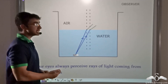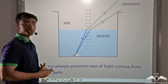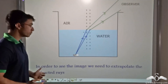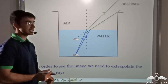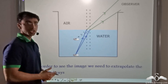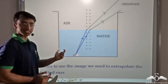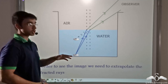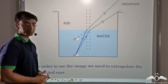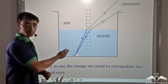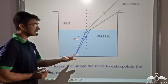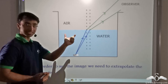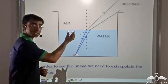When I say extrapolate, I mean produce them backwards in order to obtain the straight line path. Now you will notice that the moment we extrapolate these rays, we obtain an image of the coin. On extrapolation of the refracted rays, the image of the coin is obtained at a position that does not correspond with the actual position of the coin. This position where we get the image is raised — it is above the actual position of the coin — and it is from this point where the observer thinks that the rays of light are coming.